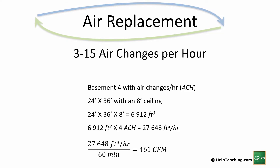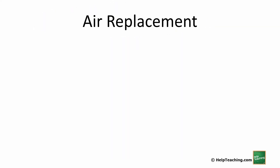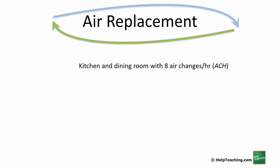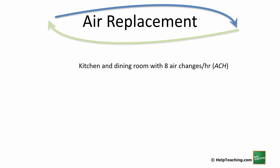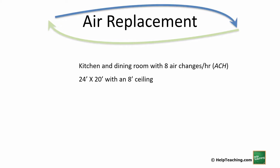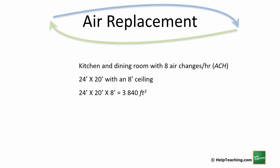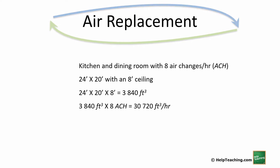Now let's look at the kitchen and dining room with 8 air changes per hour. With cooking smells and more moisture being generated, it's more important that we turn that air over on a more regular basis. This area is 24 by 20 feet with an 8-foot ceiling, giving a volume of 3,840 cubic feet. Multiplying by 8 for air changes per hour gives us 30,720 cubic feet per hour. Dividing by 60 gives us 512 cubic feet per minute.